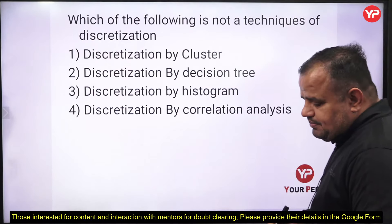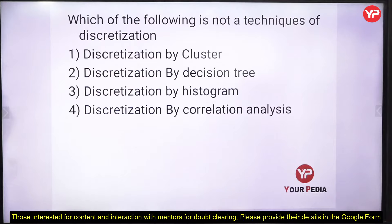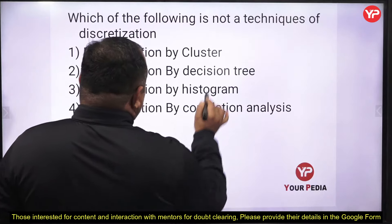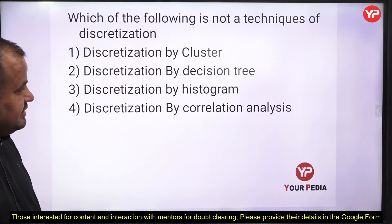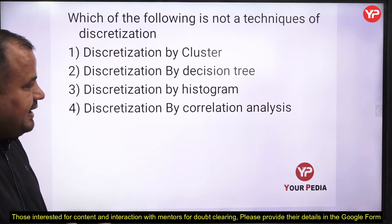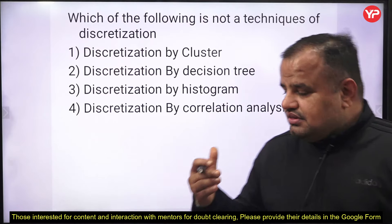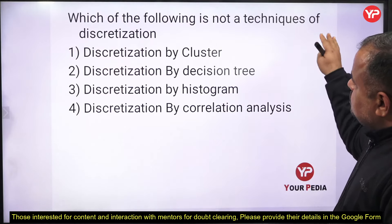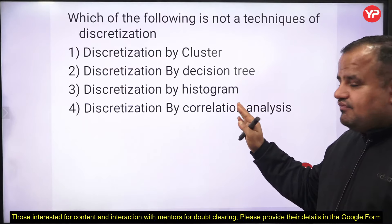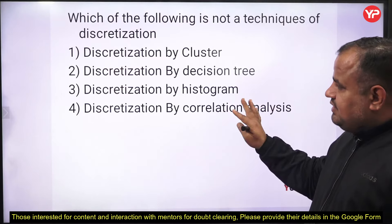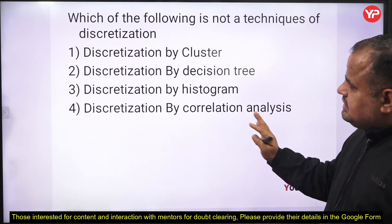Next, a problem related to data warehouse: which of the following is NOT a technique of discretization? By clustering, we can discretize the dataset. By decision tree, we can also discretize. By histogram, we can see the pattern of the data. By correlation analysis, we can also discretize. Bagging is another technique. So we have almost five techniques: clustering, decision tree, histogram, correlation analysis, and bagging. All these statements are true as discretization techniques.